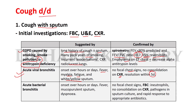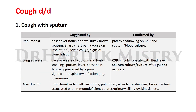Acute bacterial bronchitis is suggested by onset over hours or days, with fever, mucopurulent sputum, and dyspnea. It is confirmed by no focal chest signs, full blood count showing increased neutrophils, no consolidation on chest X-ray, pathogens present on sputum culture, and rapid response to appropriate antibiotics. The key difference between viral and bacterial bronchitis: viral produces white or yellow sputum, while bacterial produces mucopurulent sputum.